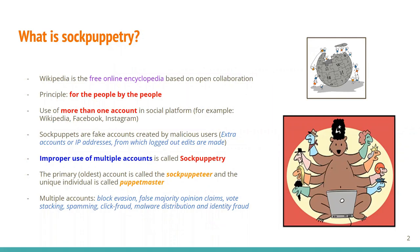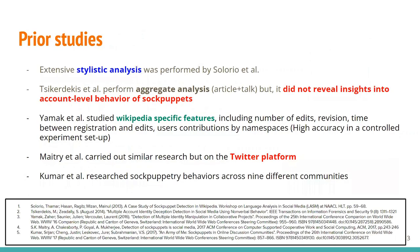In Wikipedia, or in any social media platform like Facebook or Instagram, use of multiple accounts is not accepted. Improper use of multiple accounts is called sock puppetry. The primary account is called the sock puppeteer and the unique individual behind it is called the puppet master. These multiple accounts are generally used for block evasion, false majority claims, vote stacking, and many other things.